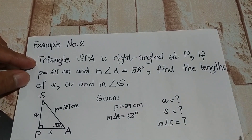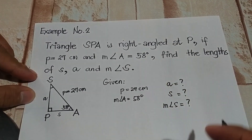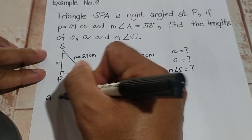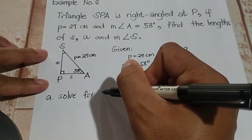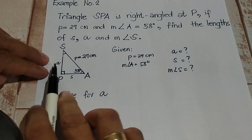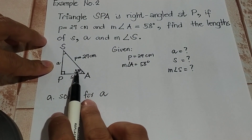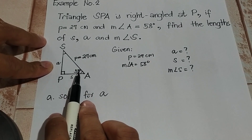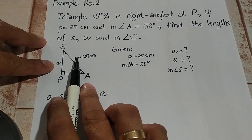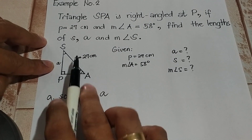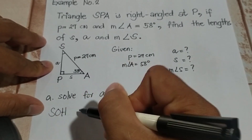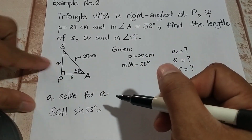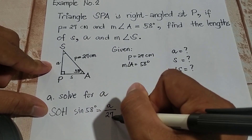Let's start with how to find the length of side A. We have side A with respect to angle 58, and the hypotenuse is 27. Side A is opposite to angle A, so we use opposite over hypotenuse — that is sine. So sine 58 degrees equals side A over 27.